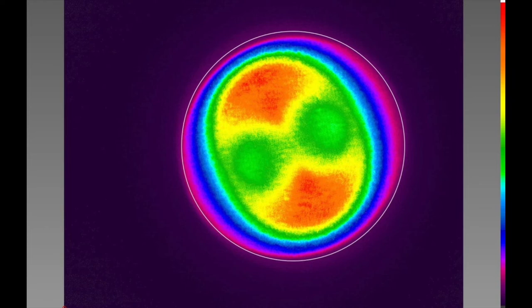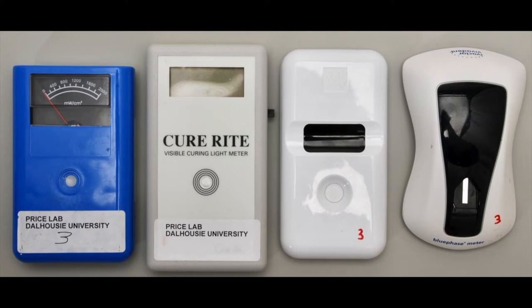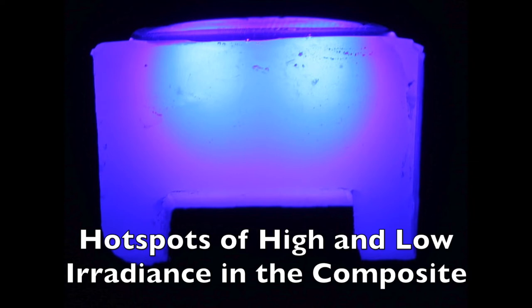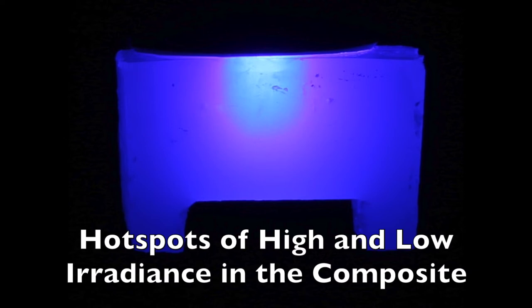You'd never see this uneven light output on a dental radiometer — you need to do beam profiling to see this. Here we can see a curing light that delivers a very non-uniform output with obvious hotspots at the center. If we turn on such a curing light over a block of cured composite, we can clearly see the hotspots of high irradiance and low irradiance. This obviously must affect the polymerization of the composite.